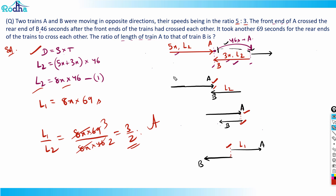To recap: make a diagram. From Situation 1 to Situation 2, train A's front end travels from train B's front end to train B's rear end — that's the length of train B, L2, covered in 46 seconds. Then from Situation 2 to Situation 3, the rear end of train B travels from the front end of A to the rear end of A — that's the length of train A, L1, covered in 69 seconds.